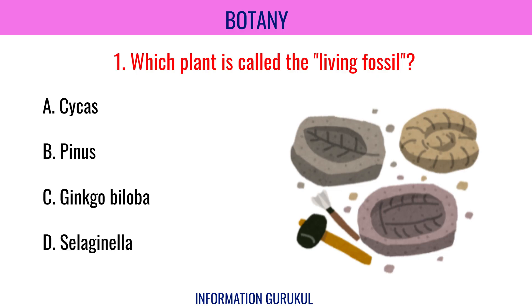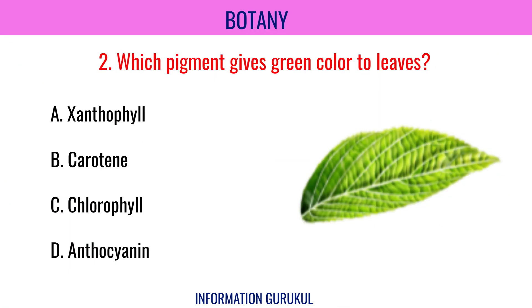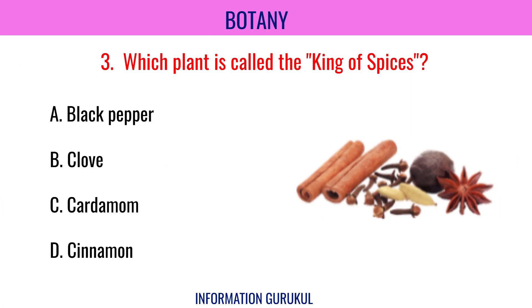Which plant is called the living fossil? Ginkgo biloba. Which pigment gives green color to leaves? Chlorophyll. Which plant is called the king of spices? Black pepper.